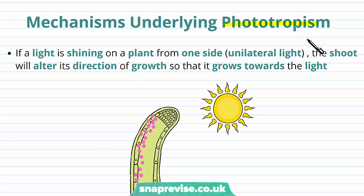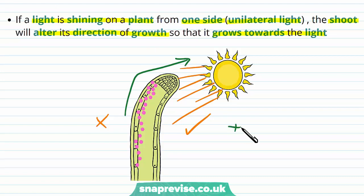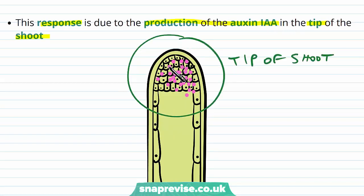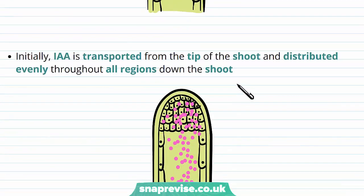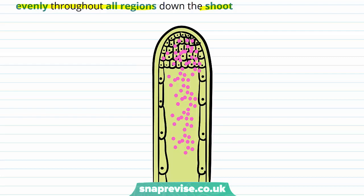So let's talk through how phototropism actually comes about. If light is shining on a plant from one side — called unilateral light — the shoot will alter its direction of growth so that it grows towards the light. This response is due to the production of the auxin indole acetic acid in the tip of the shoot. The IAA is only made at the tip, and it first gets transported downwards, distributed evenly throughout all regions down the shoot — diffusing freely without any particular buildup in one area.